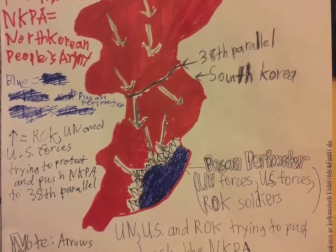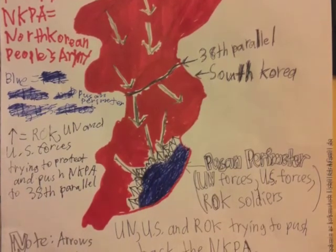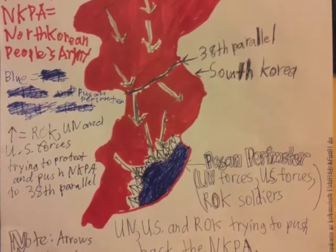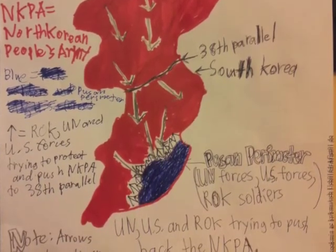The NKPA were not organized or fully prepared enough to win the Busan Perimeter and retreated. On September 15, 1950, it was Operation Chromite, MacArthur's surprise attack to surround the NKPA in Incheon. 75,000 US troops and 13,000 US Marines took care of business in Incheon.